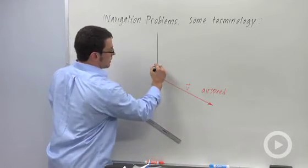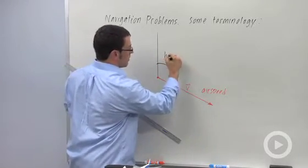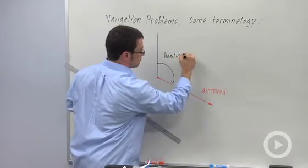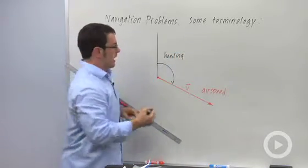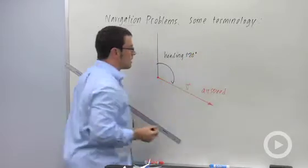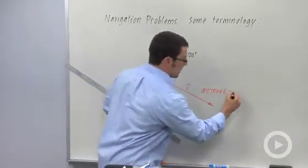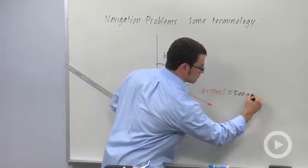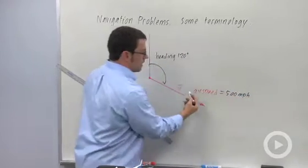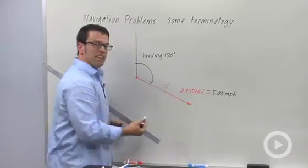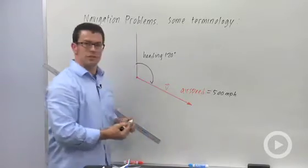So this heading could be, let's say, 120 degrees. So a heading of 120 degrees and an airspeed of 500 miles per hour. The airspeed is the magnitude of the velocity vector. The heading is its direction.